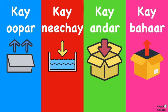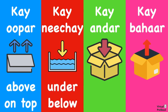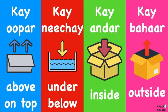Now let's learn some new phrases. We're going to talk about item position - what I mean by that is we're going to be learning what these words mean: ke upar, ke neiche, ke under, and ke bahar. Ke upar means above or on top. Ke neiche means below or under. Ke under means inside of. And ke bahar means outside of.